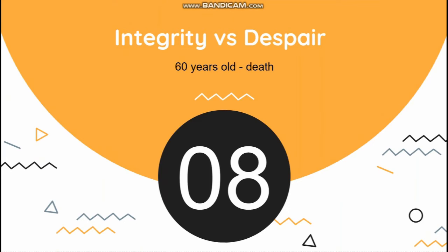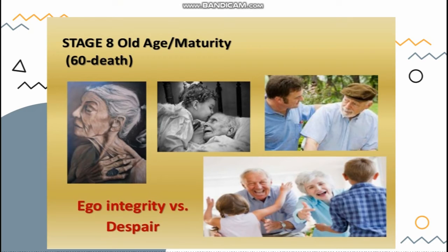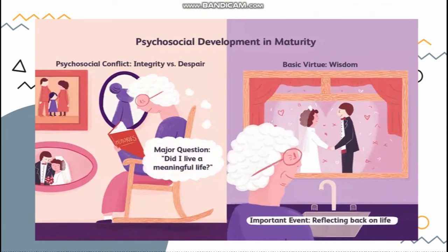The last stage is integrity versus despair, with development from age sixty until death. In our later years, we tend to look back on life, reflecting on what we have been through. If we can develop a strong sense of pride in our accomplishments, we're most likely to feel satisfied. But if we fail to develop this pride, we're likely to feel our life has been wasted. The major question during maturity is: did I live a meaningful life? We reflect back on life from our younger ages, and the basic virtue here is wisdom.